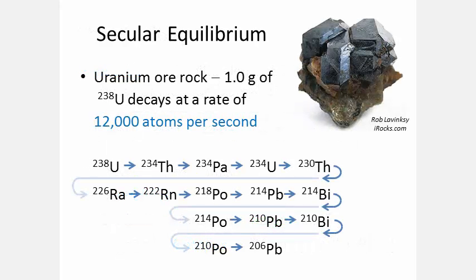Here's a picture of a natural rock containing uranium. Let's assume the rock contains one gram of U-238. We'll ignore the tiny amount of U-235 for now. U-238 decays at a rate of 12,000 atoms per second into thorium-234, which in turn decays at the same rate into protactinium-234, which in turn decays at the same rate into U-234, and so on in a long chain, ending with lead-206.